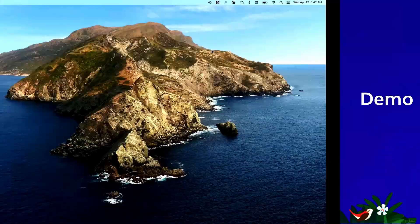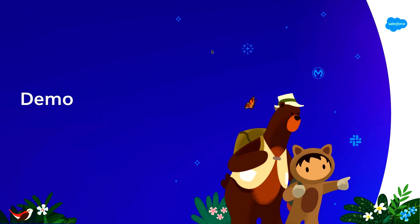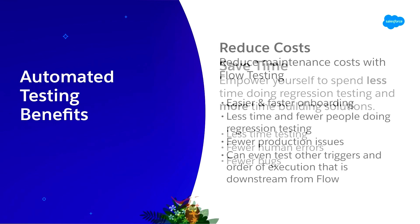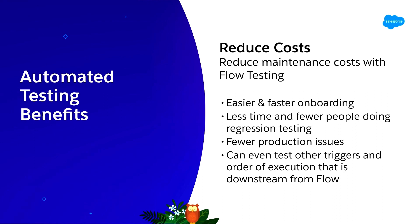That's all for the demo. Let me go back to my slides and go through a summary of what we just learned. Test automation is going to save you a ton of time — a lot of time is spent on regression testing, but if you can automate it, you don't need as many people, there's less human involvement, and therefore fewer human errors. This will also reduce cost because it's now a lot easier and faster to onboard other admins to understand what a flow is doing, so you can do regression tests even without a large team.